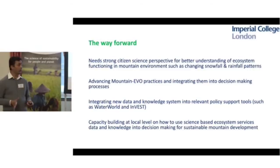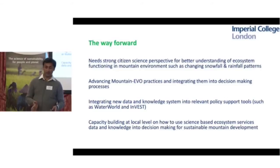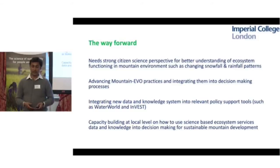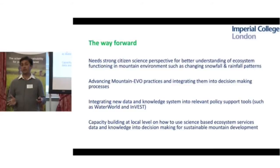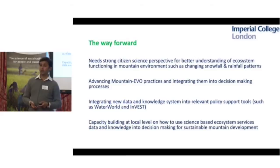We conclude that we still need strong citizen science perspectives for better understanding of ecosystem services — for example, understanding changing snowfall and rainfall patterns and advancing mountain agroforestry practices, integrating them into decision making. In terms of policy support tools, we applied WaterWorld and InVEST to characterize various ecosystem services and integrate them into policy support systems. Local stakeholders, communities, decision makers, governments, and NGOs need capacity building in both the science and decision-making tools, which will have long-lasting positive impact on ecosystem services management.